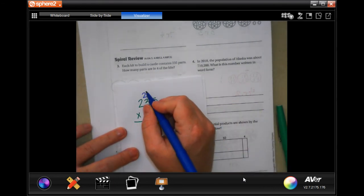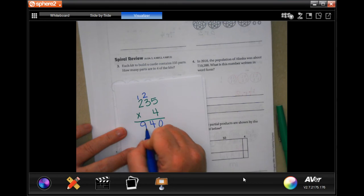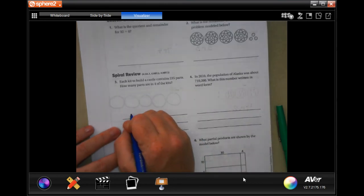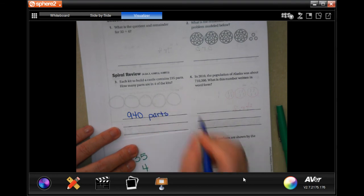So 4 times 5 is 20, carry 2. 4 times 3 is 12 plus 2 more is 14, carry the 1. 4 times 2 is 8 plus 1 is 9. 940 parts. There we go.